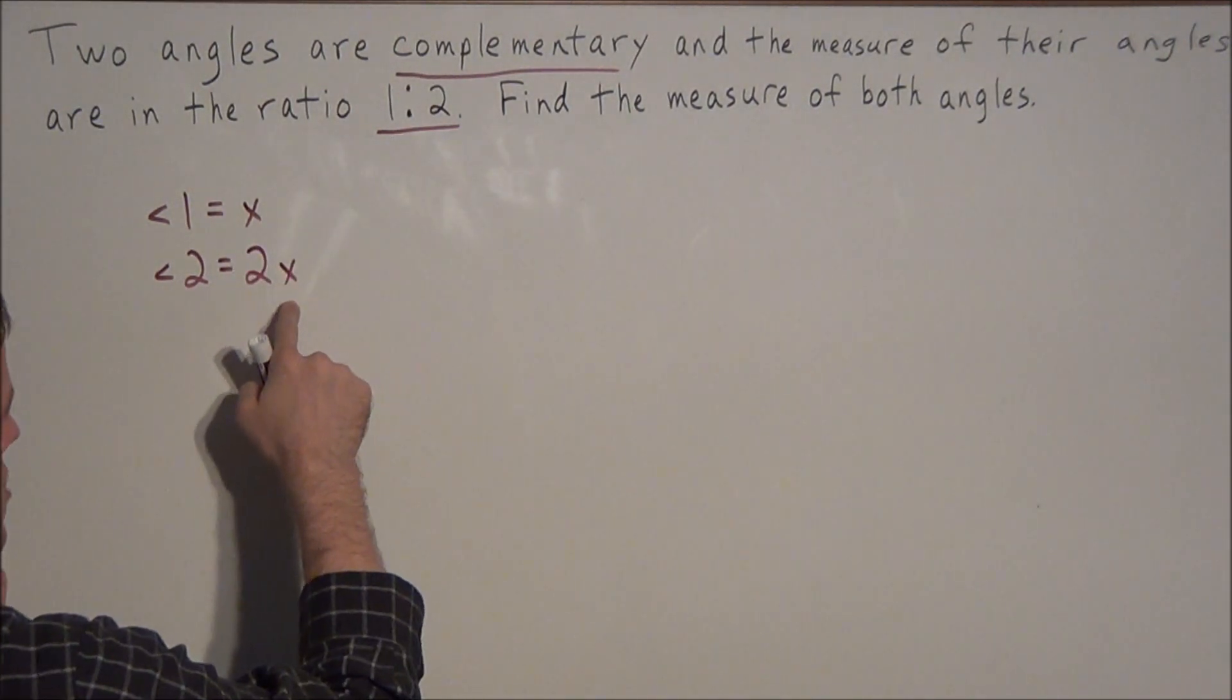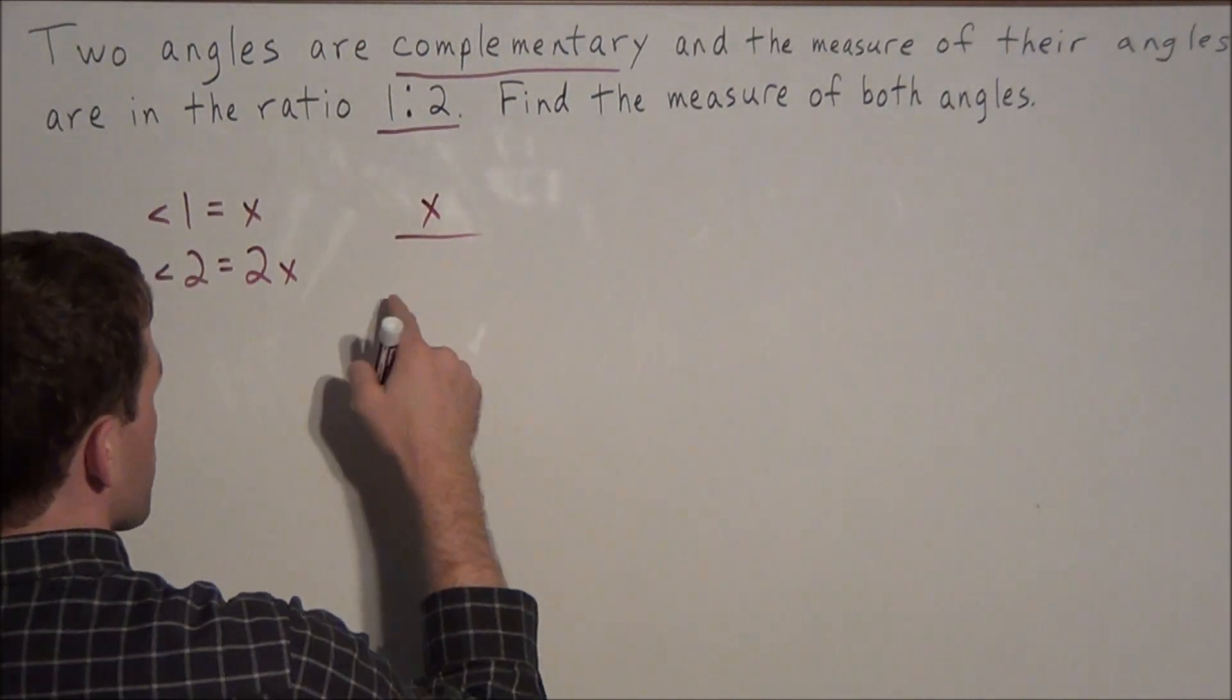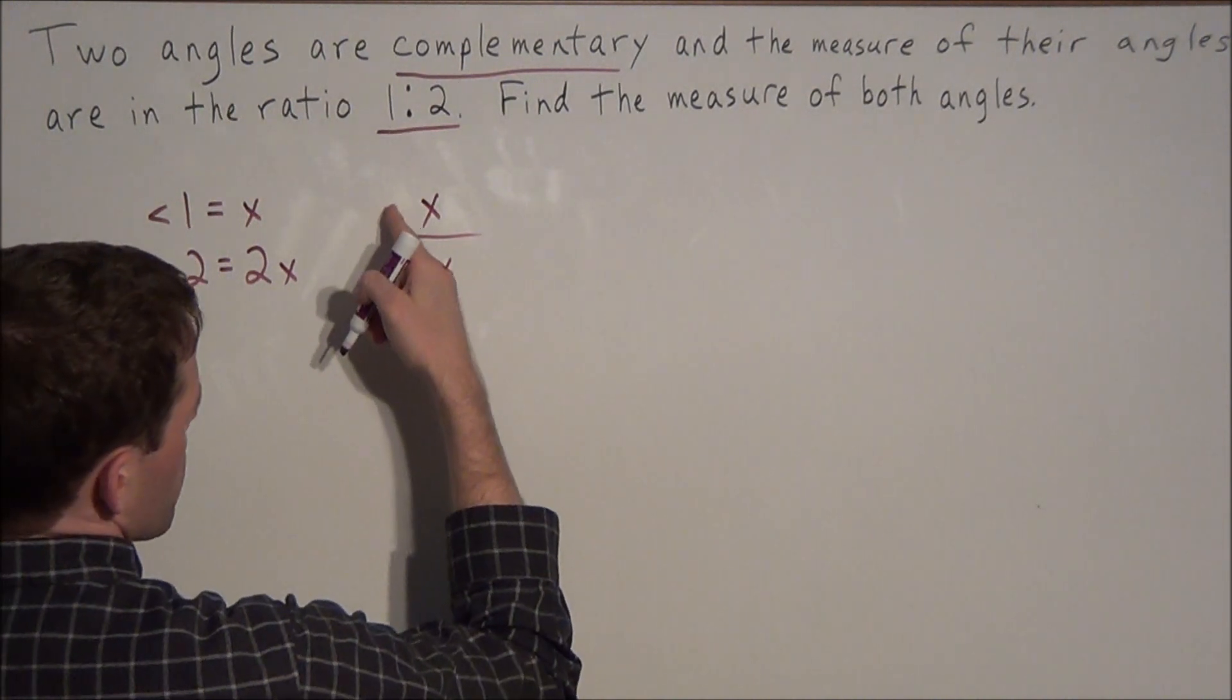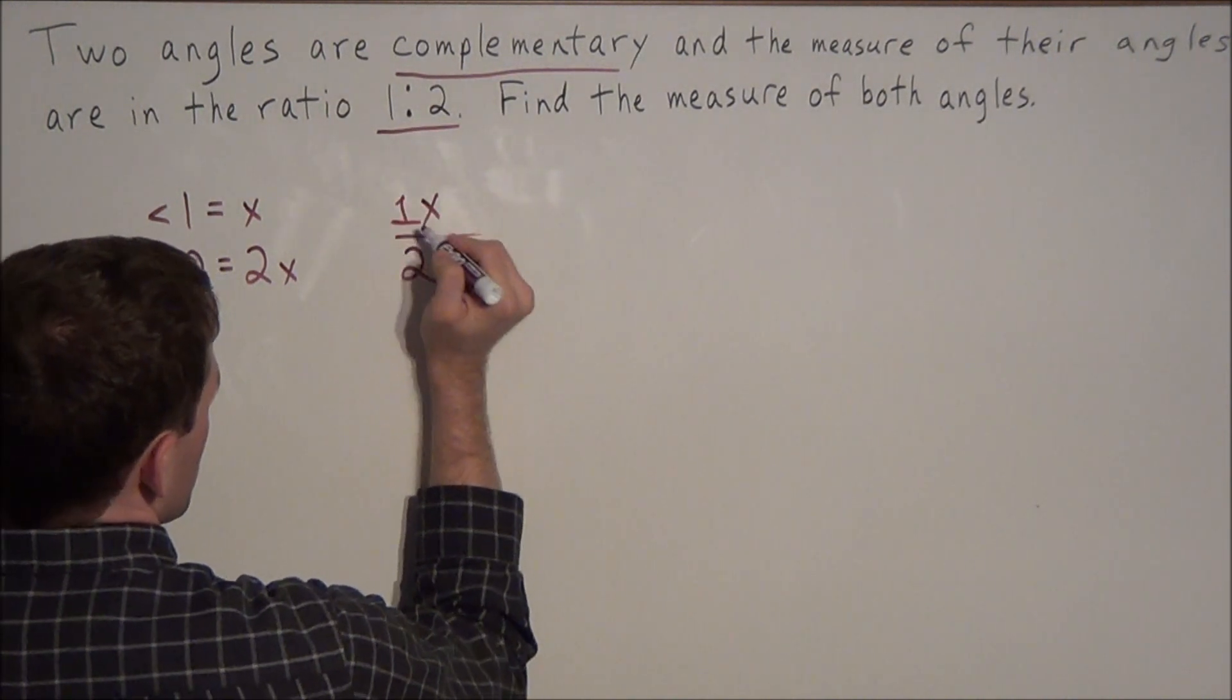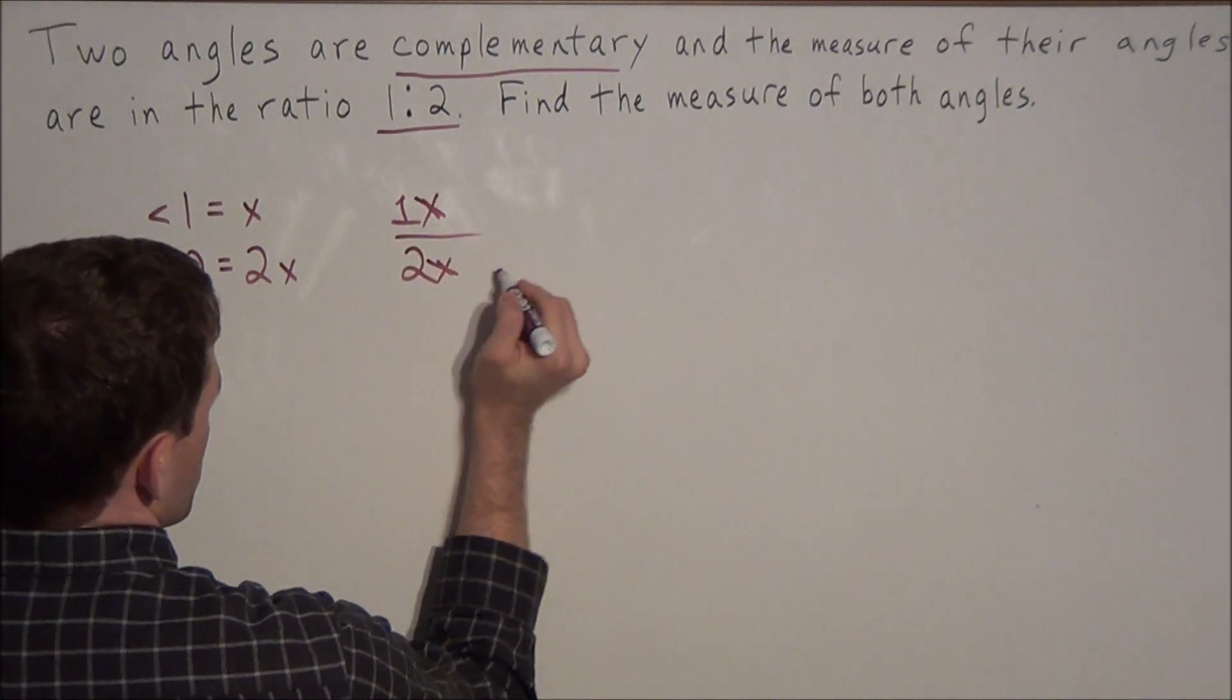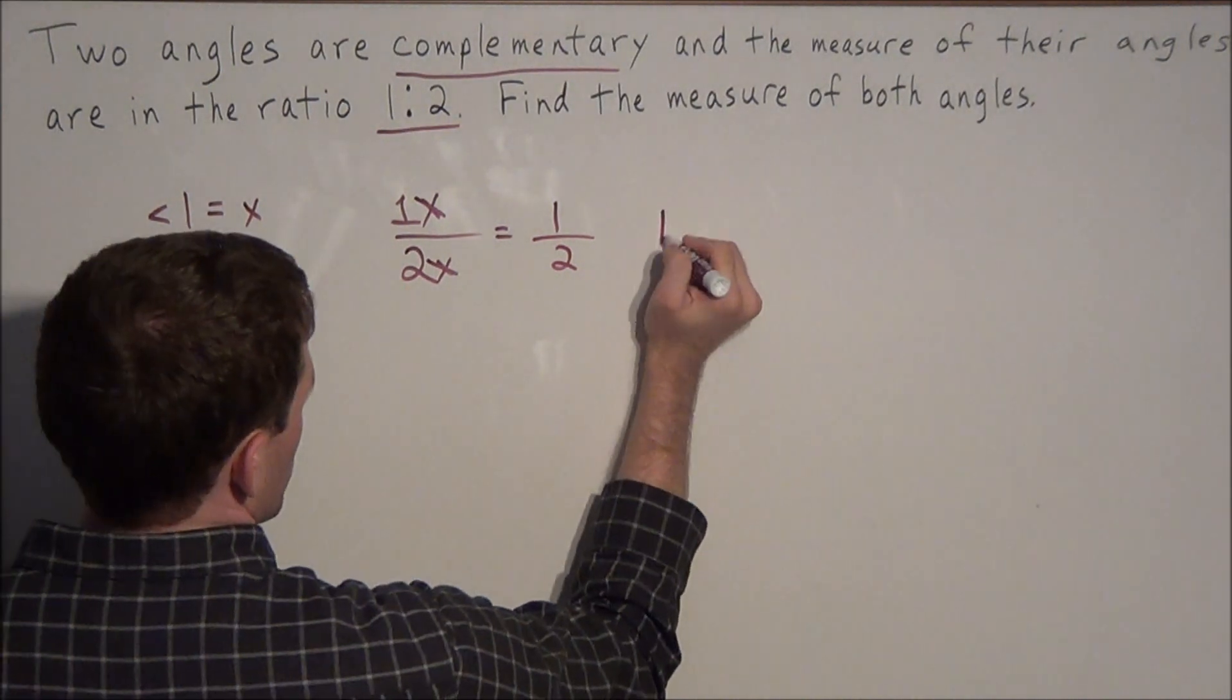Now where did I come up with this expression 2x? Well if we set them in fraction form, we have x over 2x. Notice how we could call the numerator 1x, and now x over x will cancel, bringing us right back to 1 over 2, which is the ratio 1 to 2.